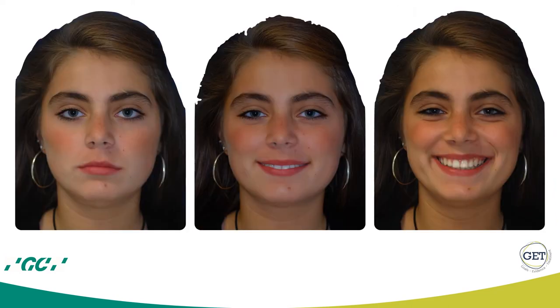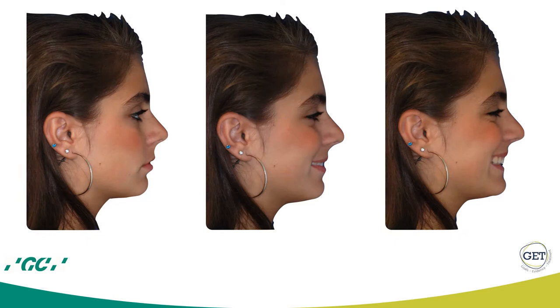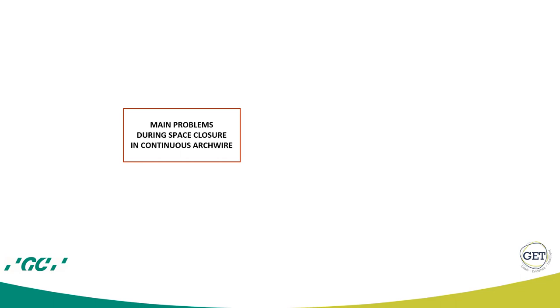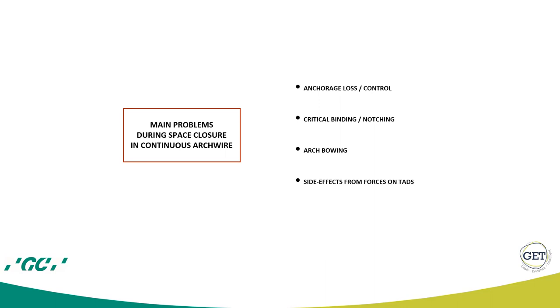The patient achieved a nice display of the smile, and on the profile an acceptable result with good definition of upper and lower lip. Of course, she still has mandibular retrusion because we cannot grow a mandible with extraction treatment. What is important for you to understand is that behind these normal steps in an extraction case, the main problems we can have during space closure are: anchorage loss, critical binding or notching, arch bowing, and side effects from forces on temporary anchorage devices.